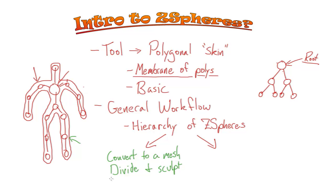There is one more step worth mentioning: re-topologize. The flow of all the polygonal edges on your base model may not necessarily be optimal. If you're taking this character into another application like Maya, 3ds Max, or Softimage, certain parts of the geometry may not be great for deformation — especially for facial animation. Re-topologization allows you to create your own topology, your own flow of polygons, with nice edge loops around the face for clean deformation.